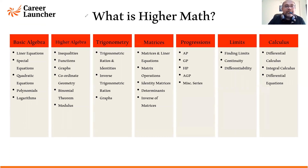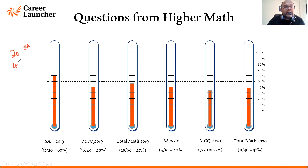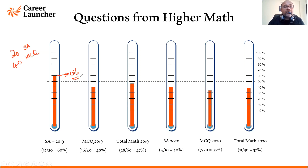Let's quickly look at the breakup of questions that have come from Higher Maths. I'm talking about the 2019 and 2020 papers for IPM, officially released by IIM Indore. The total Maths section is 60 questions — 20 are short answer type and 40 are MCQ. Out of the total 60 in 2019, 60% came from Higher Maths overall. For MCQs, 16 out of 40 questions came from Higher Maths. In total, 28 out of 60 questions — just under 50%, about 47% — were from Higher Maths.